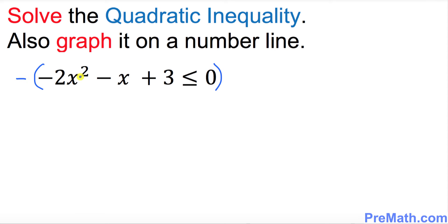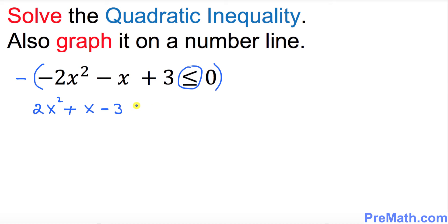We are going to multiply all the way. This becomes positive 2x squared, the two negatives become positive 1x minus 3. And look at this inequality — when you multiply by a negative sign you switch and reverse the inequality, so it goes the other way around, and this side is going to equal zero.